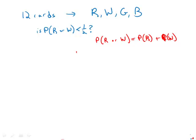Notice also that the probability of picking red or white is one minus the complement space, one minus the probability of picking green or blue.